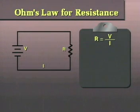Ohm's law expresses these relationships as R equals V divided by I, or resistance equals voltage divided by current.